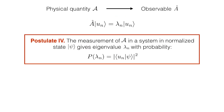Postulate 4 tells us what value we get when we measure A in a system in state ψ. It tells us that we will get a specific eigenvalue λn, with probability P given by the absolute value squared of the bracket between the associated eigenstate un and the state ψ of the system.